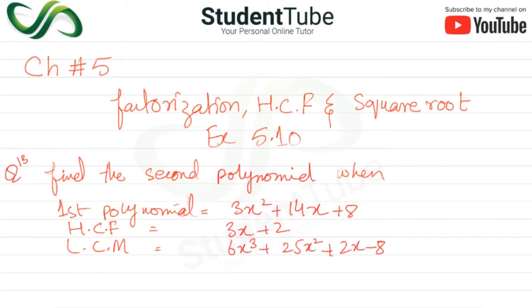Assalamualaikum, welcome to Student Tube. In this lecture we will talk about Chapter 5: Factorization, HCF, and Square Root. The topic is 5.10 — find the second polynomial when the first polynomial, HCF, and LCM are given. Question number 13.